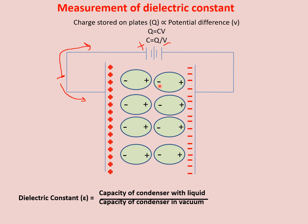दूसरा case — अगर आपके पास polar substance हो. Polar substance में molecules में थोड़ा dis-arrangement होगा, तो जब आप उसको दोनों plates के बीच में रखोगे, charge separation होगा उनमें — वो properly arranged होंगे. Polar के case में already charge separated होगा, जबकि non-polar के case में पहले charge separated नहीं था — plate में रखने के बाद उनका proper charge separation होगा.